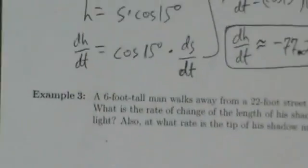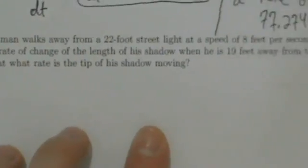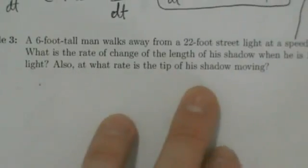Let's go ahead and do example three with related rates. Example three: a six-foot tall man walks away from a 22-foot street light at a speed of 8 feet per second. What is the rate of change of the length of his shadow when he is 19 feet away from the light? And also, at what rate is the tip of the shadow moving?